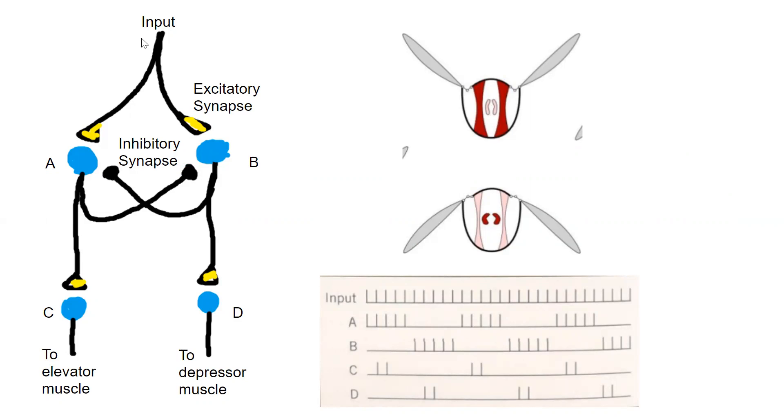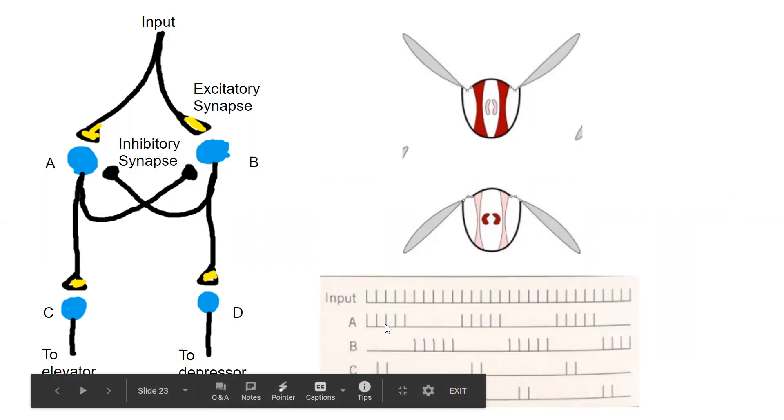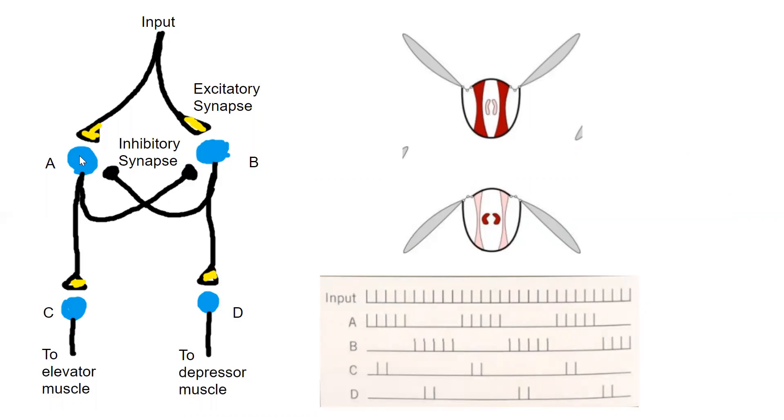So first start this off. We need a signal to go here first, or to either one of them first, but let's just use A for now. So it goes to A first. It has to have a higher threshold because A has to inhibit B. And if they're both inhibiting at the same time, then you'd get no signal.